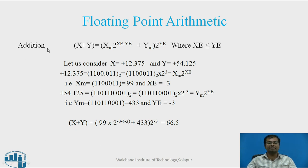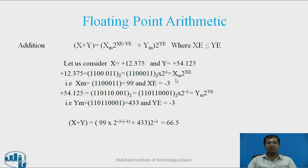Now we will see the addition of x plus y, finding the sum of two numbers. Let us consider x is equal to plus 12.375 and y is equal to plus 54.125. If we represent plus 12.375 in binary, it becomes 1100.011, which is equal to 1100011 base 2 into 2 raised to 3, in the form xm into 2 raised to xc, where xm is 1100011, which equals 99 in decimal, and xc equals minus 3.